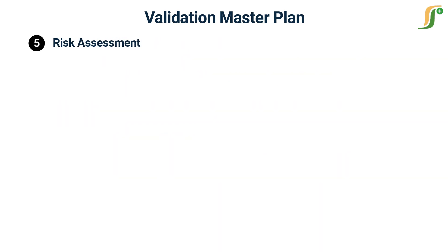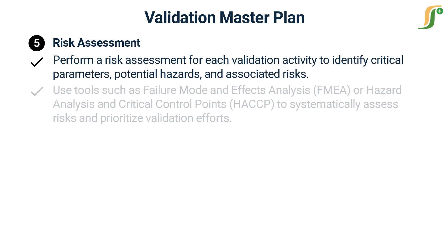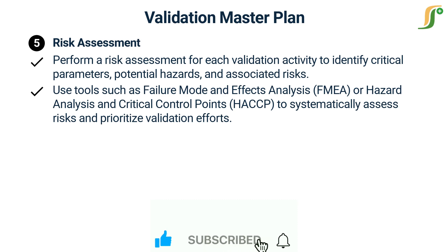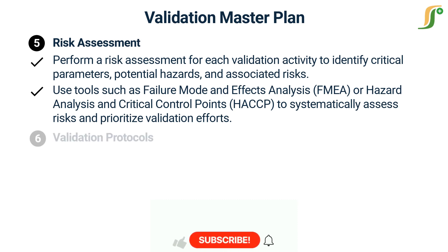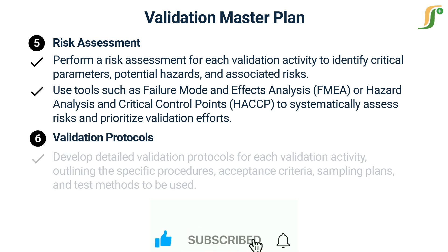The fifth step is to perform a risk assessment for each validation activity to identify critical parameters, potential hazards, and associated risks. Use tools such as failure mode and effects analysis (FMEA) or hazard analysis and critical control points (HACCP) to systematically assess risks and prioritize validation efforts. Document the risk assessment process and outcomes.